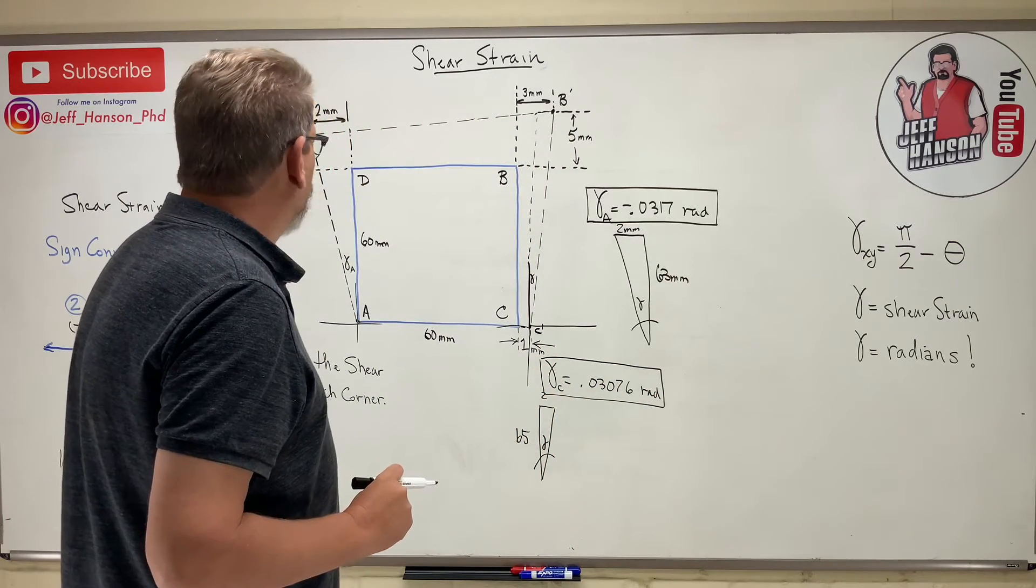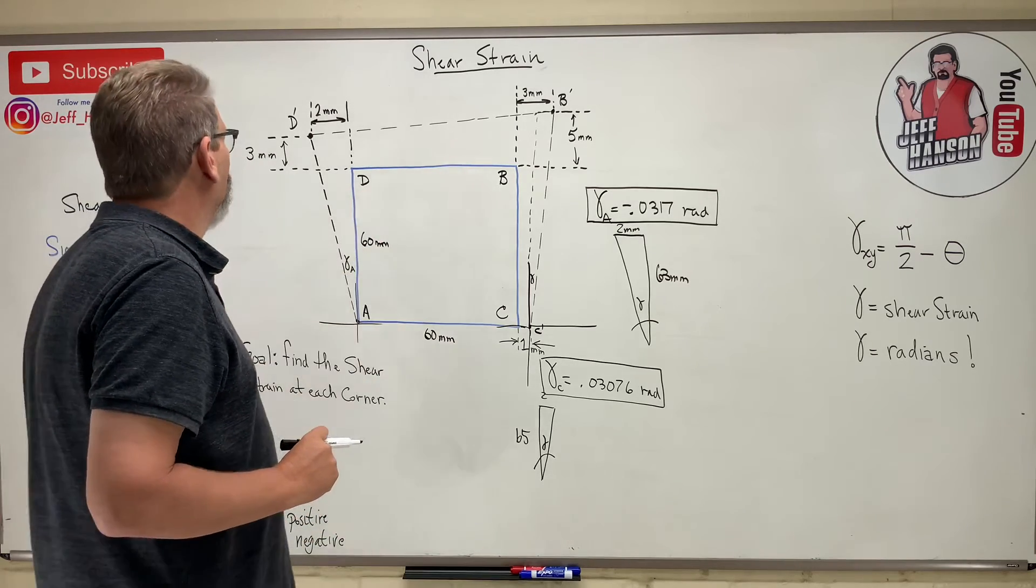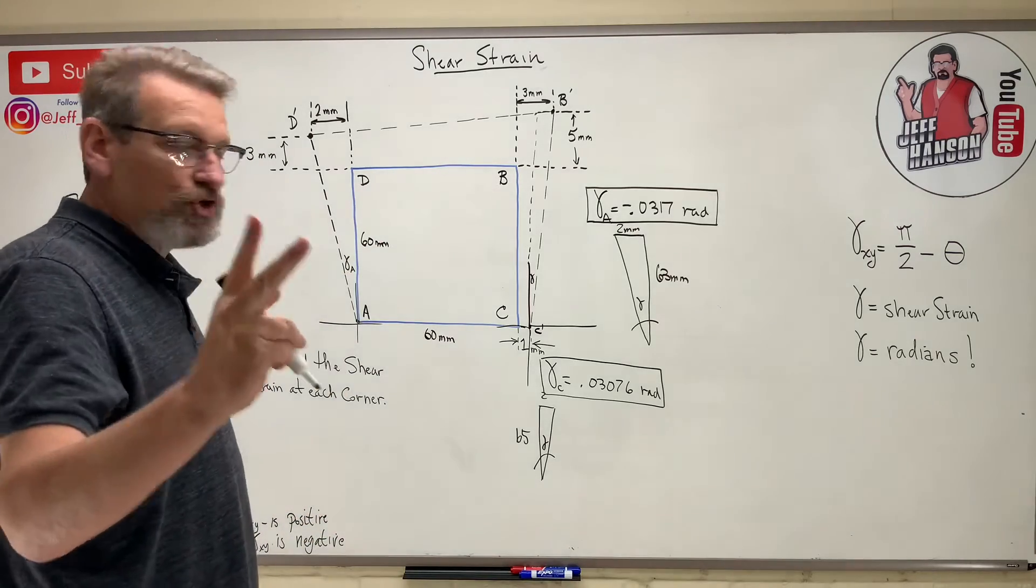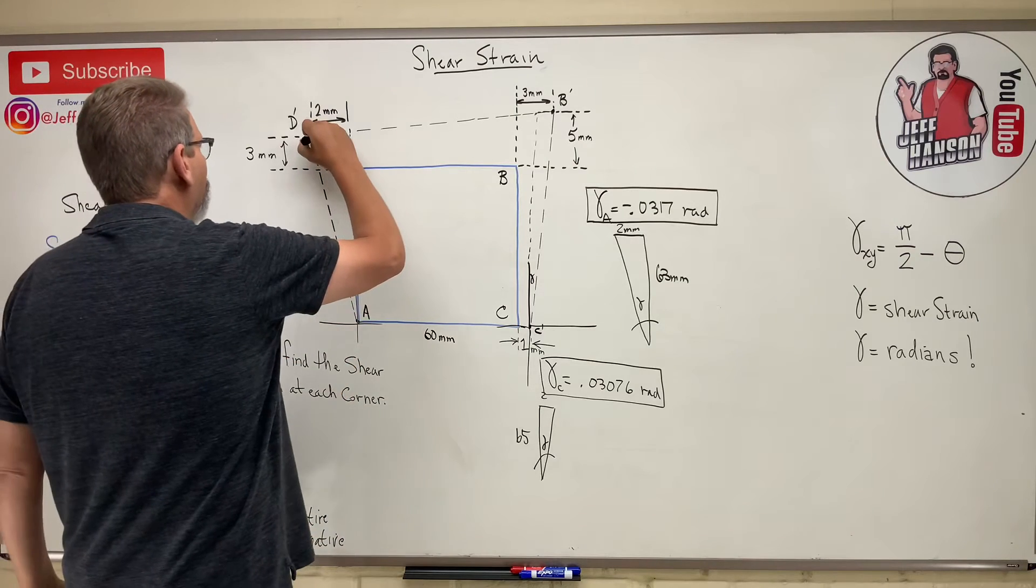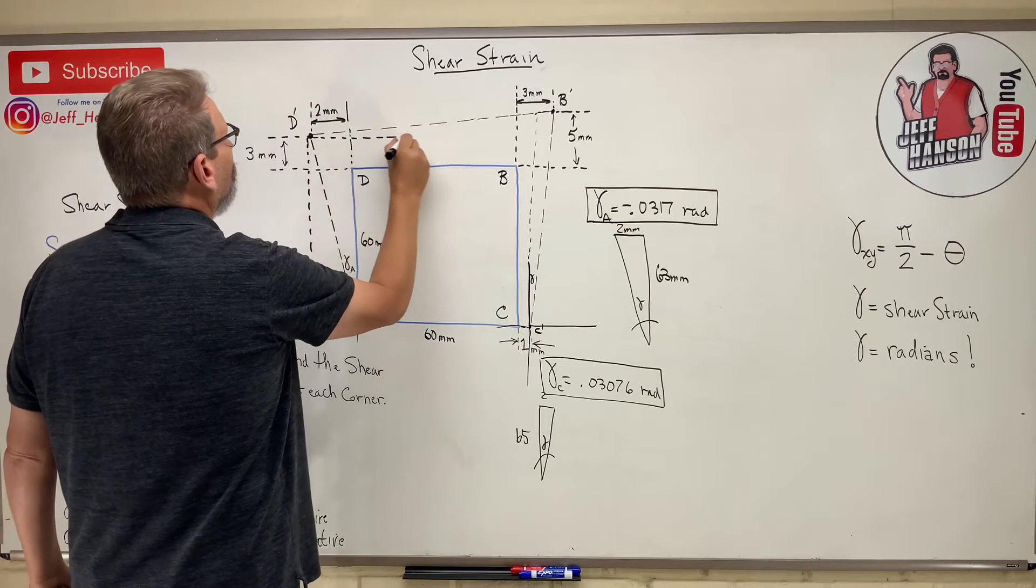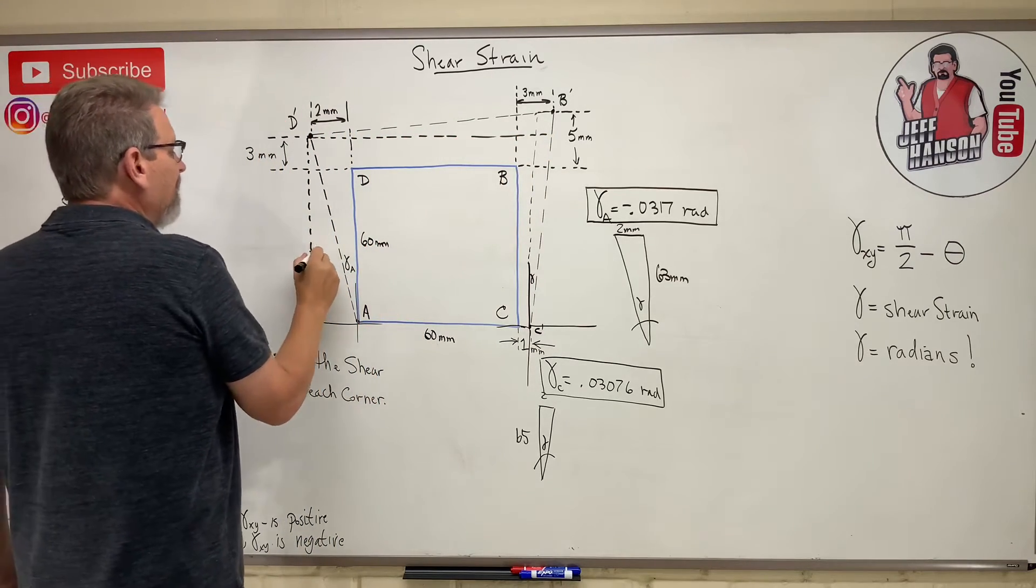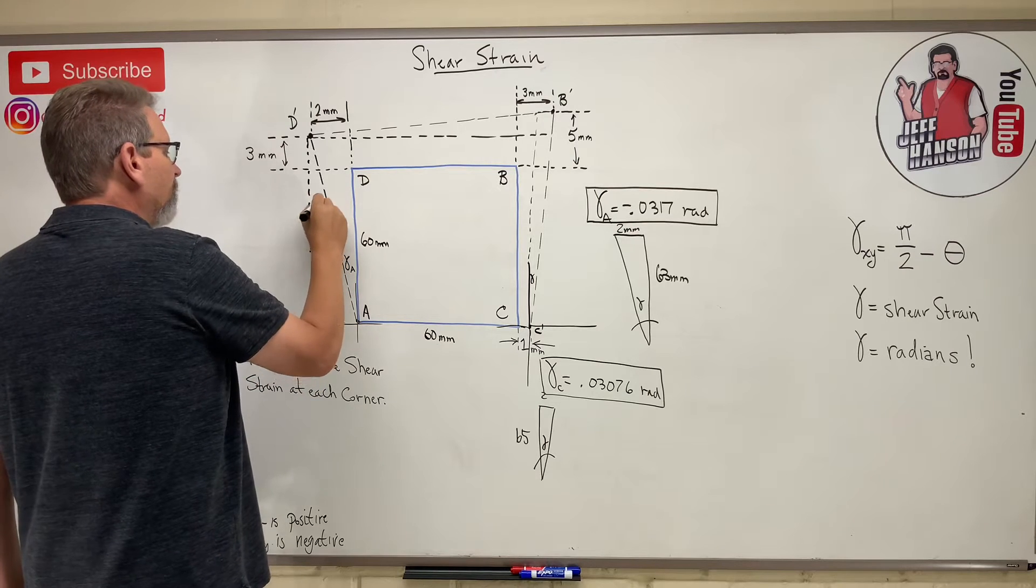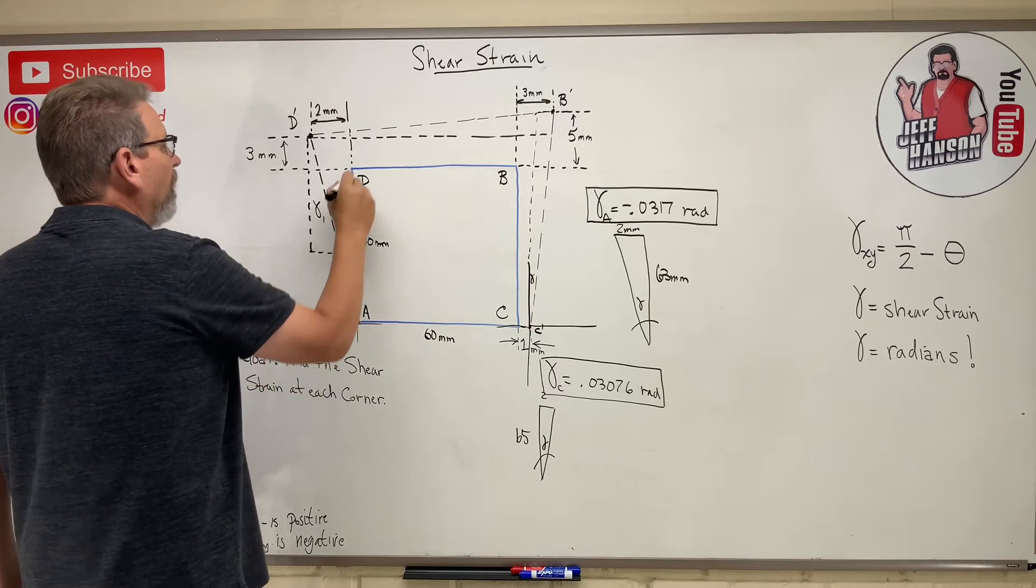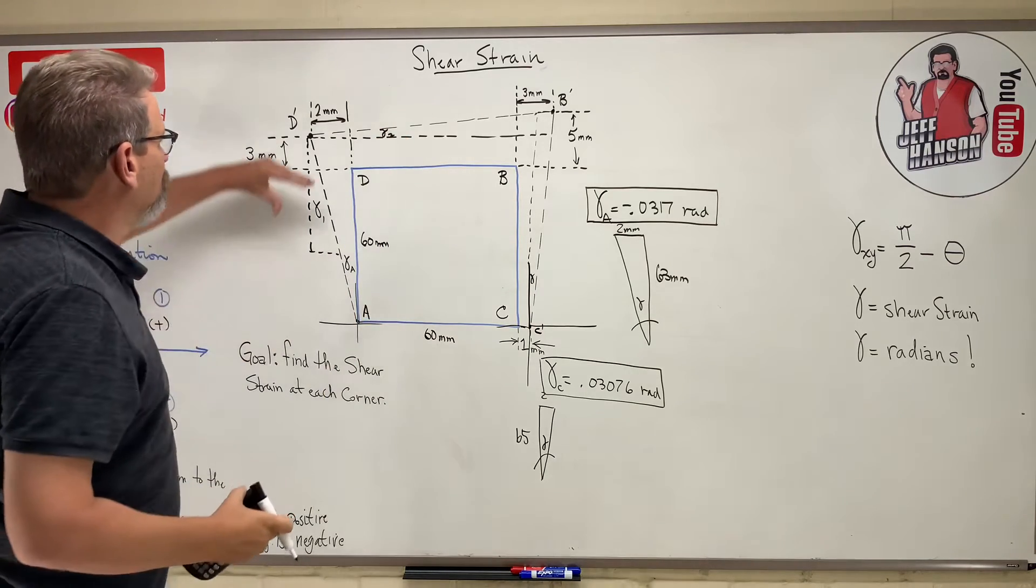How about corner D? Now D has two. When I say two, I mean two triangles. It has, D is going to be composed of this gamma, I'll call it gamma 1, and this gamma, which I'll call gamma 2. It used to be 90 degrees, now it's something more than 90 degrees.